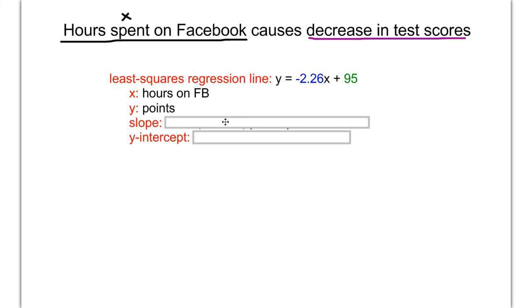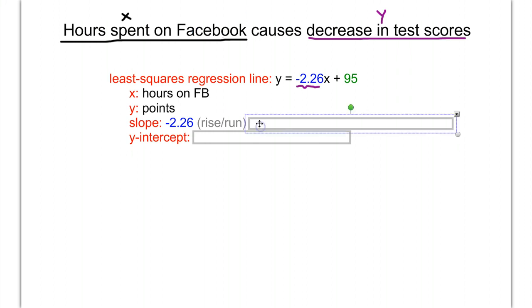The slope is always rise over run, or y over x. The number is negative 2.26 because in slope-intercept form, the slope is the number next to x. For units, we're looking at rise over run: y (rise) over x (run). That's decrease in test scores over hours on Facebook, or points over hours on Facebook.